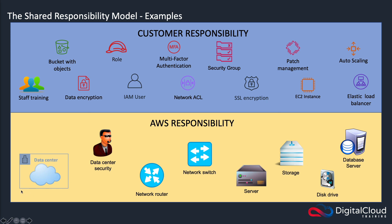AWS responsibilities include: running the physical data centers and maintaining data center security; looking after physical networking equipment like routers and switches; maintaining physical servers and the software layers that run on them, including storage systems; disposing of disk drives when needed; and managing the underlying servers and database software that runs services like DynamoDB. The customer would be responsible for populating that table with data and managing it.